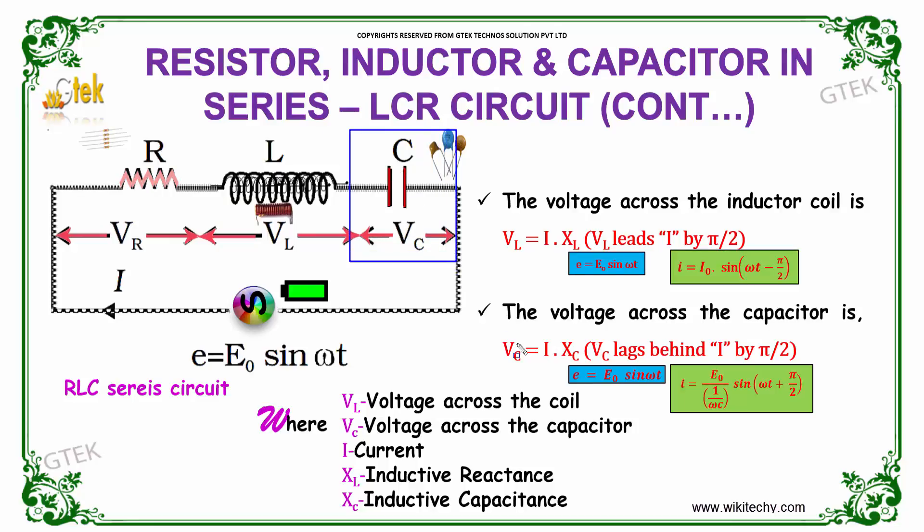The voltage across the capacitor is VC, which is I into XC. VC lags behind I by pi by 2.